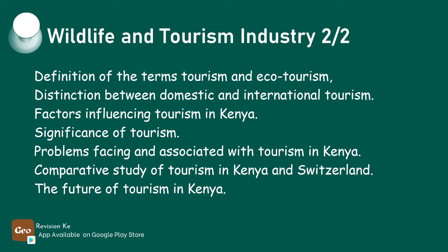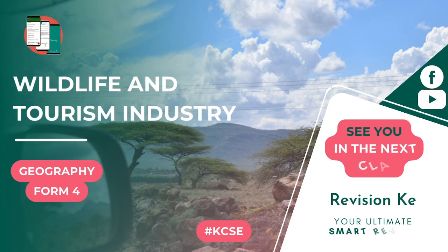We are supposed to be able to discuss the management and conservation of wildlife in East Africa, discuss the future of tourism in Kenya, and finally compare and contrast tourism in Kenya and Switzerland. That way we will have managed the topic wildlife and tourism industry — a Form Four topic in geography.